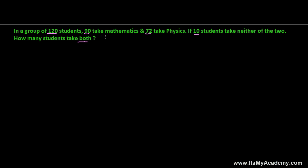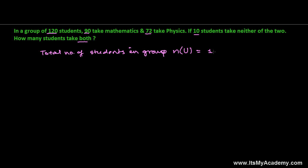So these are the highlighted points we need to consider. In a group — or you can say in a class — the total number of students, that's our universal set, which is containing every student: those taking mathematics, not taking mathematics, taking physics, not taking physics, not taking both subjects, and those taking both subjects. The complete number of students is 120. The number of students taking math — let me denote that as N(M) — and those are 90 students.